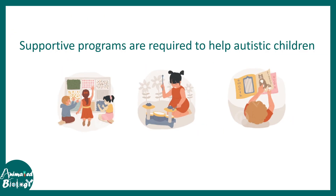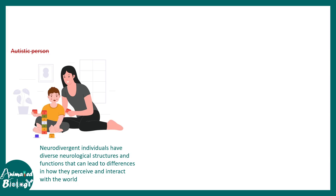Autism does not have a cure because the behavioral outcomes are so diverse that tailoring a customized program is very difficult, but supportive programs are required to help autistic children. It is also a misnomer to simply label these people as autistic. A neurotypical person behaves in a standard way, while these children are actually neurodivergent — they have neurological structures and functions that lead to differences in how they perceive the world. They are not abnormal, not stupid — they are just different, and they perceive the world differently.